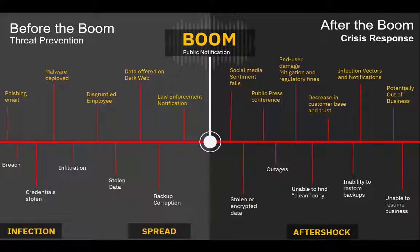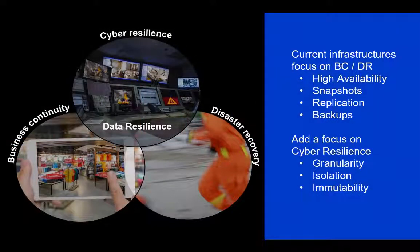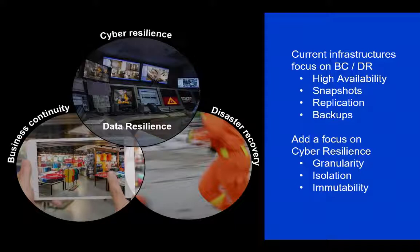Now we've dealt with risk before through traditional business continuity and disaster recovery planning, but we now have to think about a new aspect of risk — cyber resilience is that area. And if we combine all three of these, we can build a data resilience capability. So we have our traditional high availability, snapshot and replication mechanisms, as well as our backups. But now we need to look at it from a cyber resilience point of view. We want to bring in granularity, isolation, and immutability.